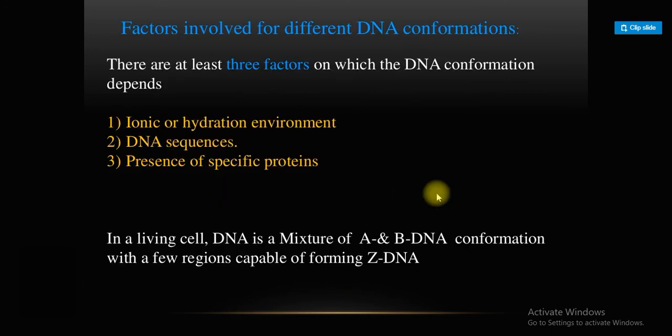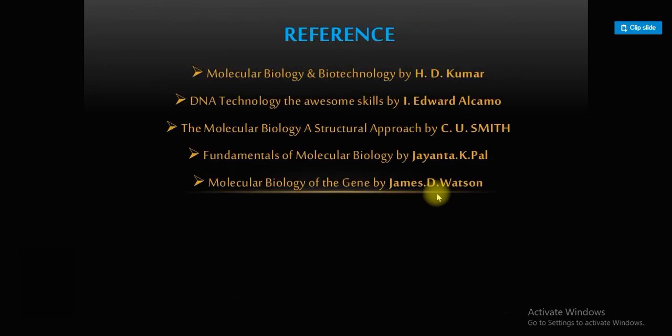There are mainly three factors involved in different DNA conformations: 1) ionic and hydration environment, 2) DNA sequence, and 3) presence of specific proteins. In a living cell, DNA is a mixture of A and B conformations, with a few regions capable of forming Z-DNA.